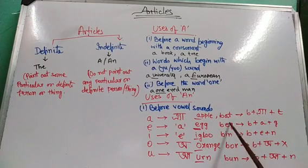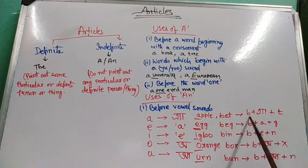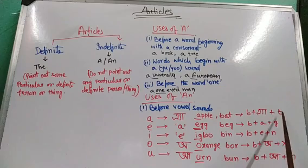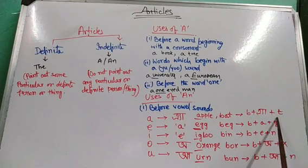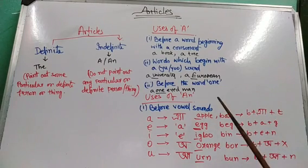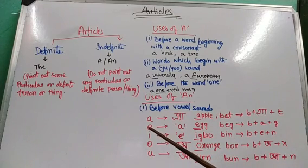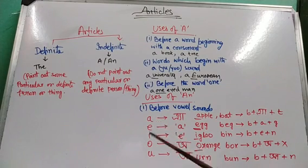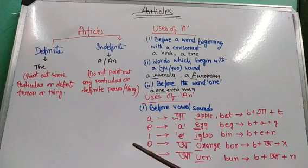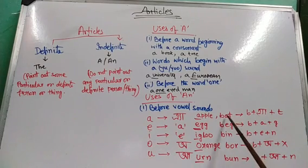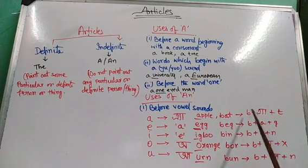Similarly, when we have A in the middle, like bat - what do we say? B-æ-T. Bag - B-æ-G. Mat. Sad - S-æ-D. So the sound of A is 'æ.'